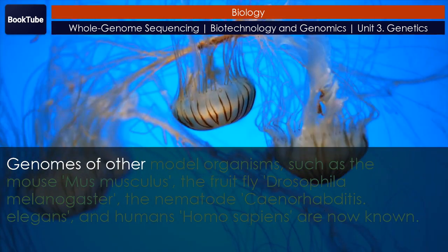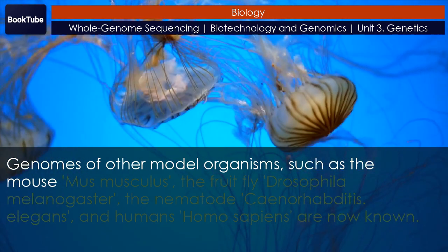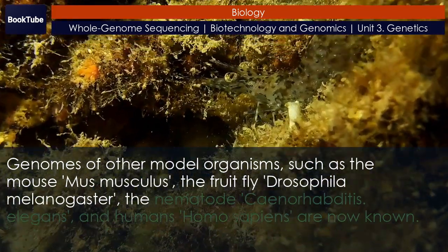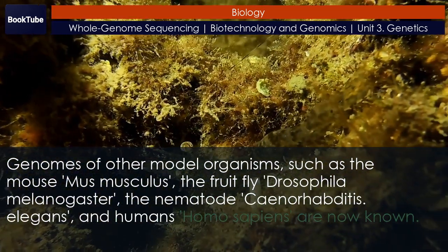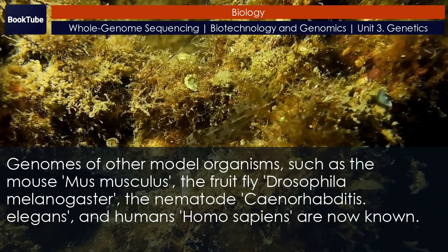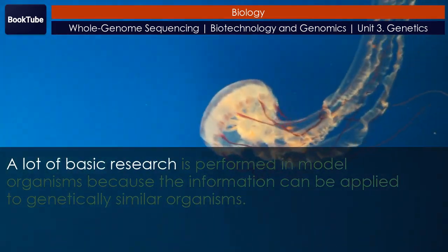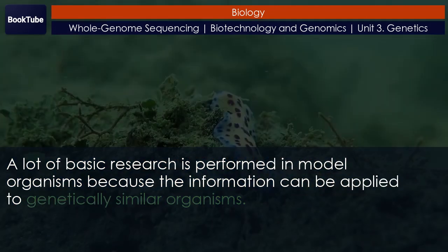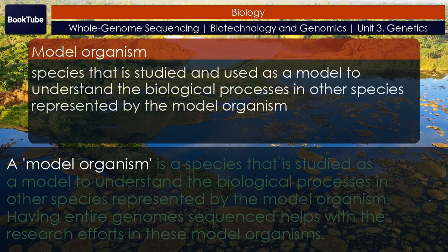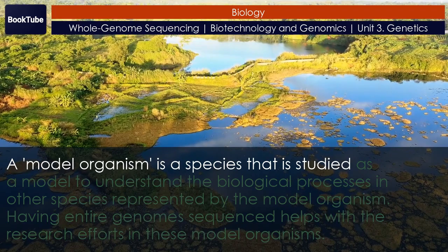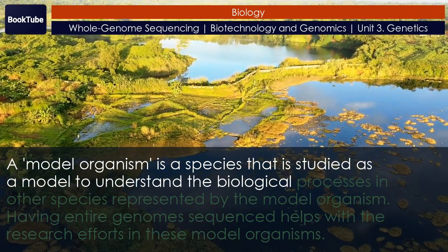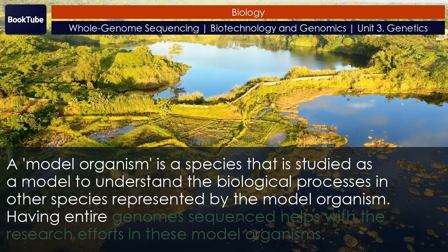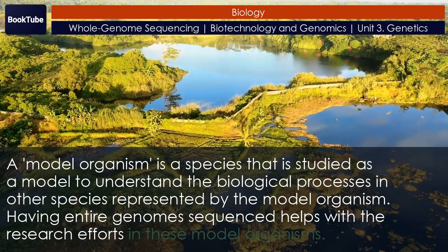Genomes of other model organisms — such as the mouse (Mus musculus), the fruit fly (Drosophila melanogaster), the nematode (Caenorhabditis elegans), and humans (Homo sapiens) — are now known. A lot of basic research is performed in model organisms because the information can be applied to genetically similar organisms. A model organism is a species studied as a model to understand biological processes in other species. Having entire genomes sequenced helps with the research efforts in these model organisms.